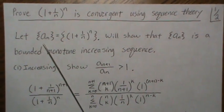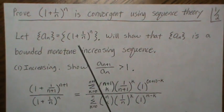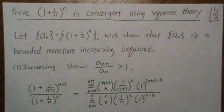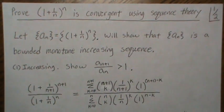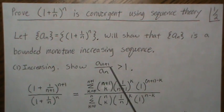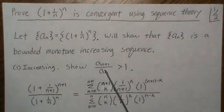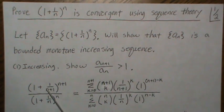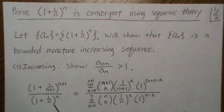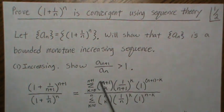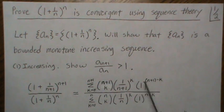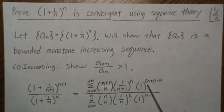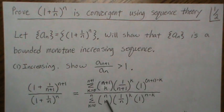Let the sequence a(n) be represented as shown, and we want to show that a(n) is a bounded monotone increasing sequence. First let's show that it's increasing. We do that by looking at the ratios — if they're all greater than 1, then we know the sequence gets a little bit bigger each time, meaning it's increasing. Looking at the ratio with n+1 over n, we use the binomial theorem to expand the numerator and denominator and we get this expression. Since 1 raised to any power is 1, we can essentially remove those terms.